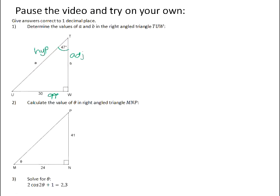Okay, so we need to set up some equations in order to solve for A and B. Now, if we start with side marked A, A is on the hypotenuse of the triangle and the side that we've been given is the opposite side.